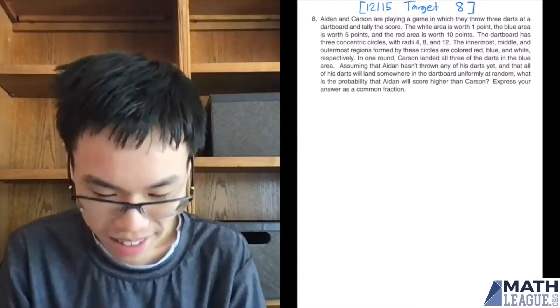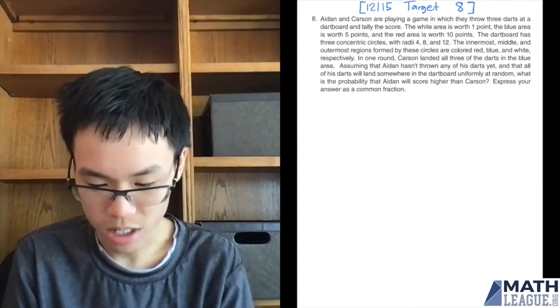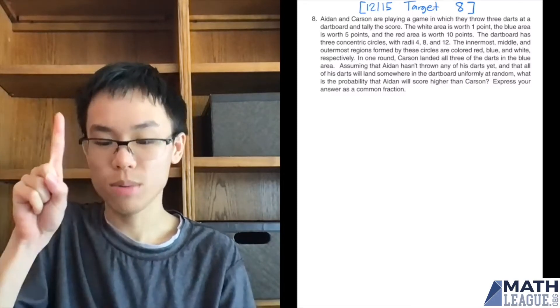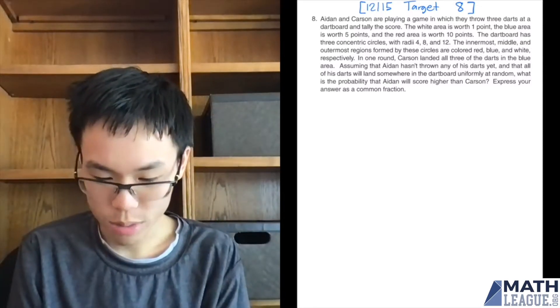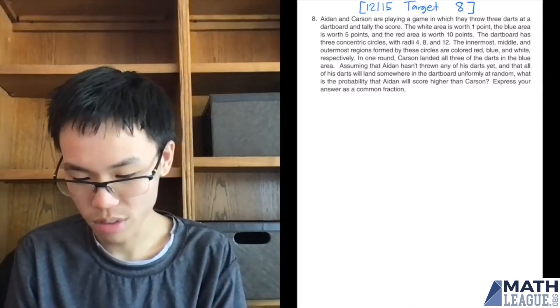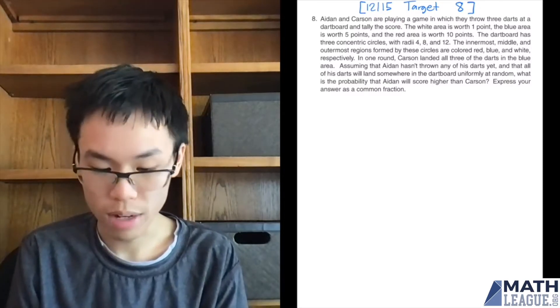First, I'll read. Aiden and Carson are playing a game in which they throw three darts at a dartboard and tally the score. The white area is worth one point, the blue area is worth five points, and the red area is worth 10 points. The dartboard has three concentric circles with radii 4, 8, and 12. The innermost, middle, and outermost regions formed by these circles are colored red, blue, and white, respectively.